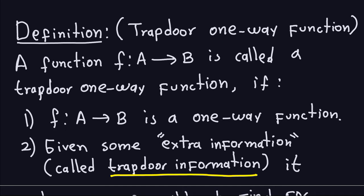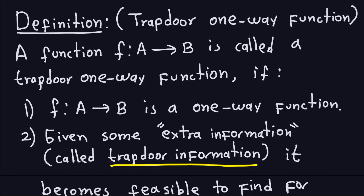So let's go ahead and define what the trapdoor one-way function is. It's just a function, a usual function from A to B. We're gonna say that that function here is a trapdoor one-way function if two things happen. The first thing that has to happen, of course, is that the function itself is a one-way function.